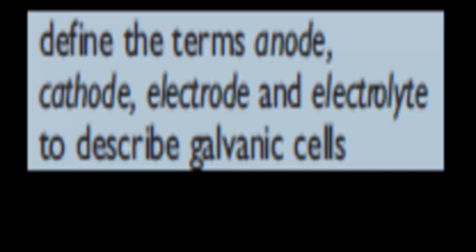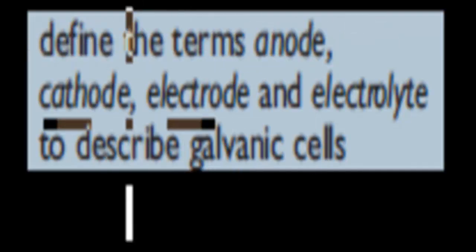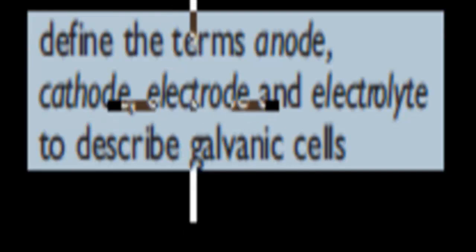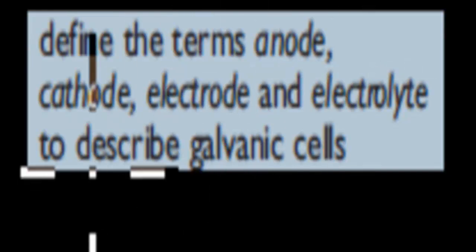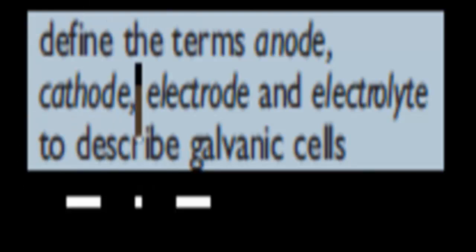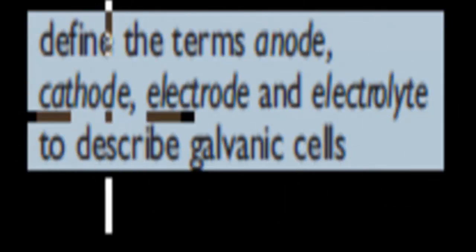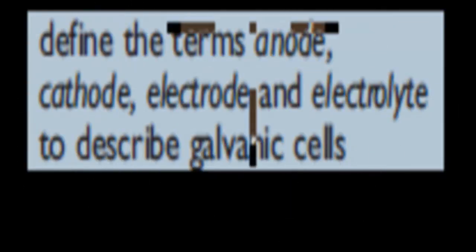In this video, we're going to cover the different terms that we mentioned in the last couple of videos, because the dot point itself says: define the terms anode, cathode, electrode, and electrolyte to describe galvanic cells. So we have to actually be able to know the definition for these different terms.